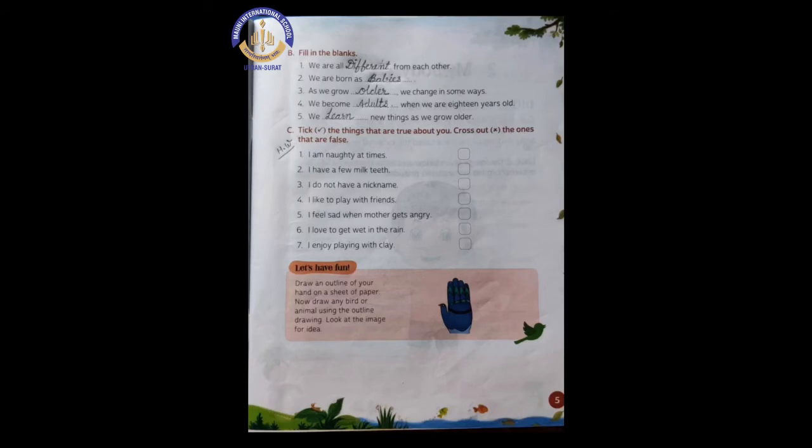Now number 3. As we grow dash, we change in some ways. So the answer is older. And the spelling is O-L-D-E-R. Older.